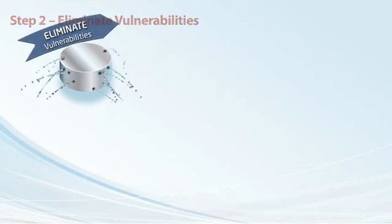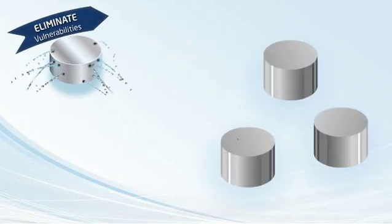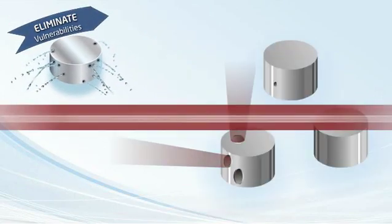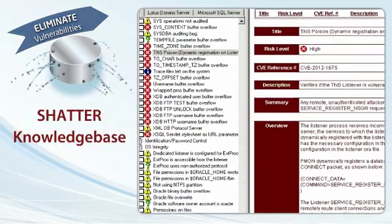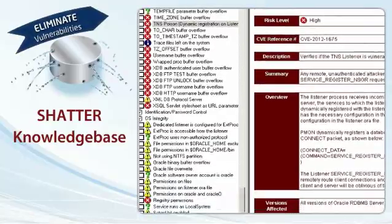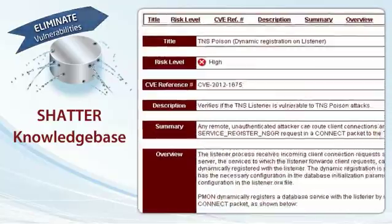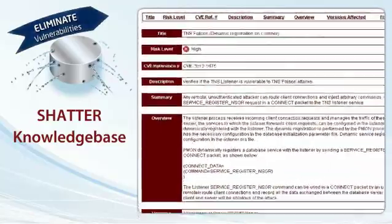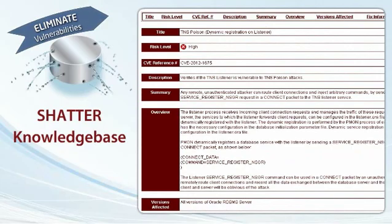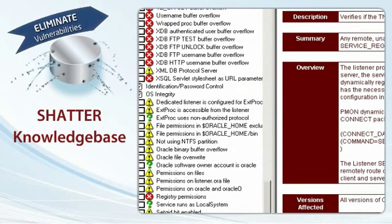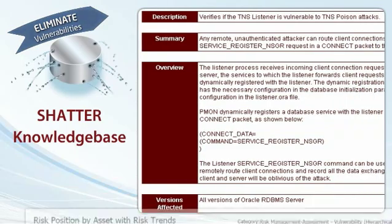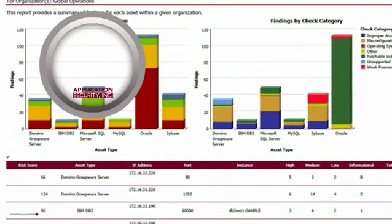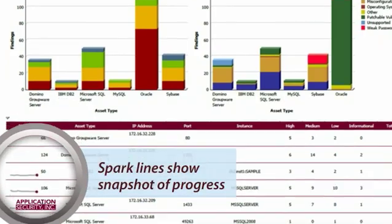Step 2: Eliminate Vulnerabilities. DB Protect's Vulnerability Management is the industry leader in vulnerability assessment and remediation. At the heart of vulnerability management is the Team Shatter knowledge base — the industry's most comprehensive vulnerability and misconfiguration resource. Each Team Shatter Check provides detailed and easy-to-understand vulnerability descriptions, so enterprises can quickly eliminate or remediate top threats.